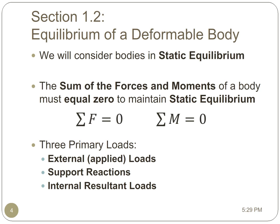Now we have three primary loading conditions. We have external loads, we have support reactions, and we have internal resultant loads. The internal resultant loads are what we're going to calculate in order to be able to determine what the stress and strain in a body are.